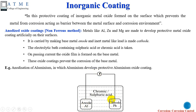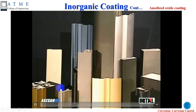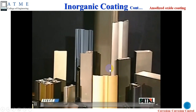You can see the example here: aluminium, which has to be protected from corrosion, is connected to a battery, and an inert metal such as graphite is also connected to the battery. Both metals are immersed in an electrolytic bath containing chromic acid and sulfuric acid. When electric current is passed, aluminium is oxidized, and an inorganic coating — aluminium oxide (Al₂O₃) — is formed on the entire surface of the metal, acting as a protective barrier to prevent further corrosion.